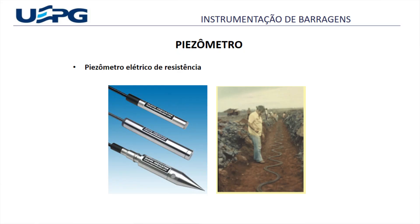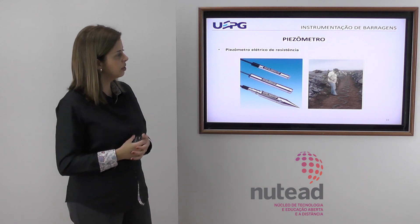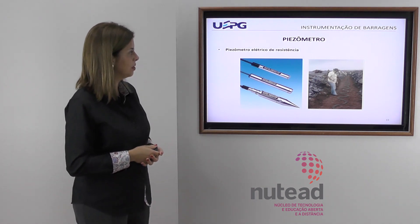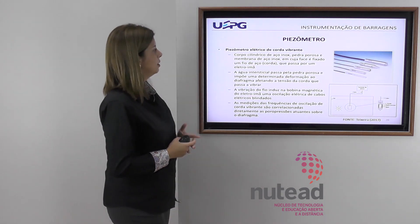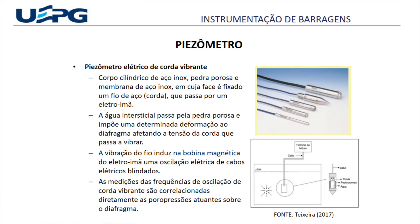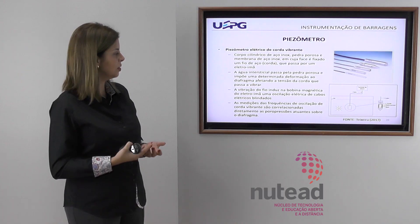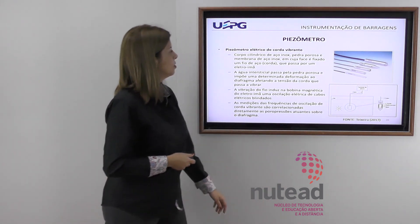O piezômetro elétrico de resistência é um cilindro metálico com pedra porosa e diafragma, instrumentado com extensômetros elétricos de resistência. A posição de equilíbrio do diafragma é indicada por um circuito elétrico que se fecha quando a pressão pneumática contrapõe a pressão de água. O elétrico de corda vibrante tem corpo cilíndrico de aço inox, pedra porosa e membrana de aço inox, onde um fio de aço passa por um eletroímã. A água intersticial passa pela pedra porosa, impõe deformação ao diafragma, afetando a tensão da corda, gerando oscilação elétrica correlacionada diretamente com as poropressões atuantes.